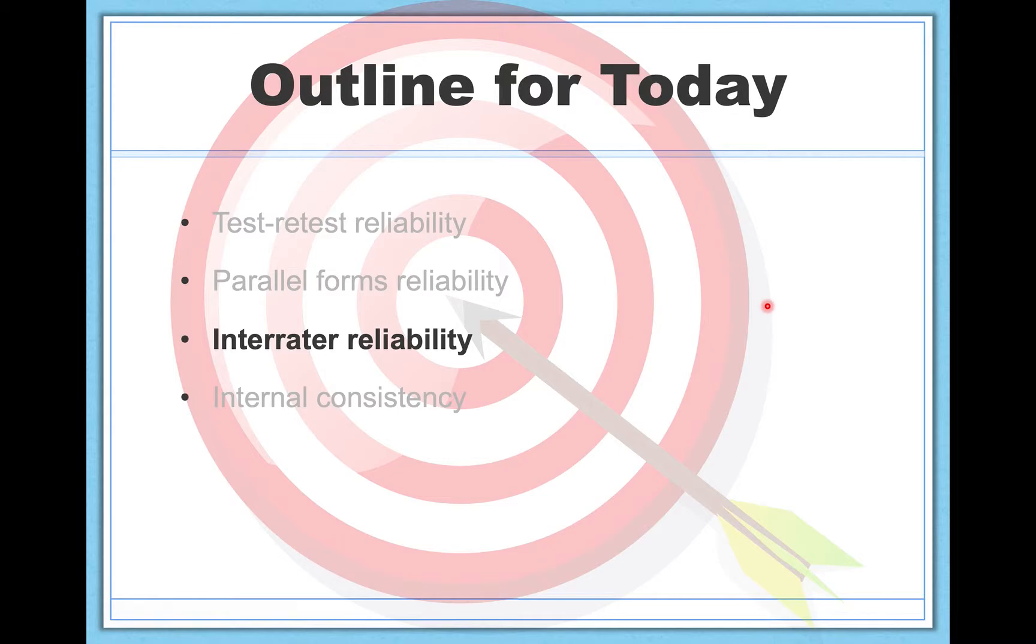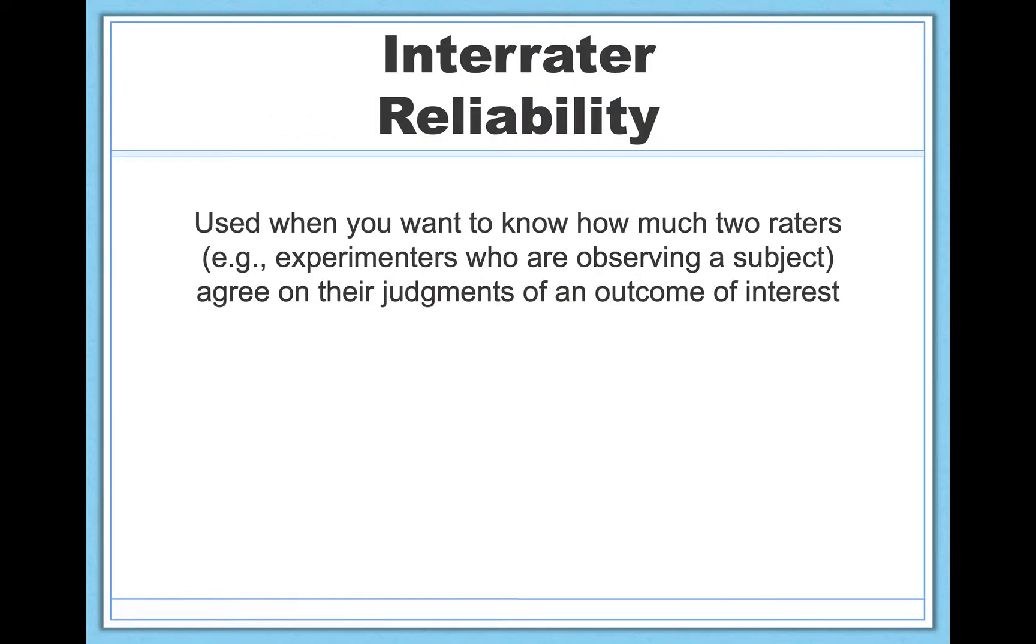Next, we have inter-rater reliability. This one is used for a slightly different situation, but it's still an idea of consistency underlying it. Inter-rater reliability is used when you want to know how much two different raters or experimenters or observers agree on their judgments of an outcome of interest. So there are many cases in which you might be interested in inter-rater reliability, but it's definitely something that's most prevalent in observational research. So typically, if you're observing, say, a child, you're a developmental psychologist, maybe, you're not just going to observe that child alone. You're going to use multiple observers, multiple experimenters, because people can miss things. You may not notice something. So it's better to have multiple observers to really make sure you're getting a true and accurate representation of what happened. And this is what inter-rater reliability is all about. It's about, are those different experimenters consistent with one another in terms of what they're seeing? Do they tend to agree with one another?